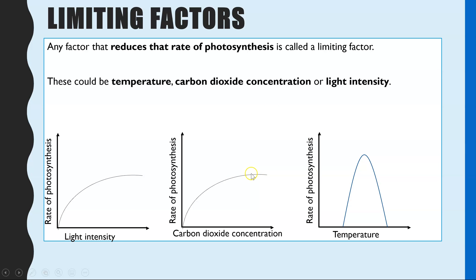At very high concentrations, carbon dioxide concentration is no longer limiting because there's enough of it, so it must be one of the other two factors limiting the rate where we see the plateau. A similar idea applies to light intensity — light intensity affects the rate of photosynthesis because it is required in the light dependent reactions for photolysis and photoionization. At low light intensities, light intensity is the limiting factor, but at high light intensities we see a plateau, so another factor must now be limiting.